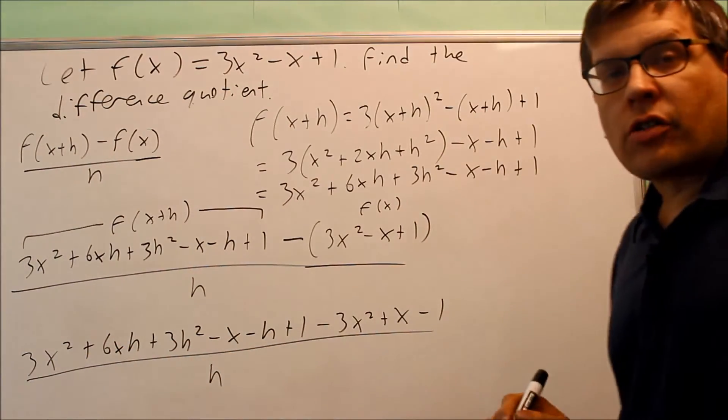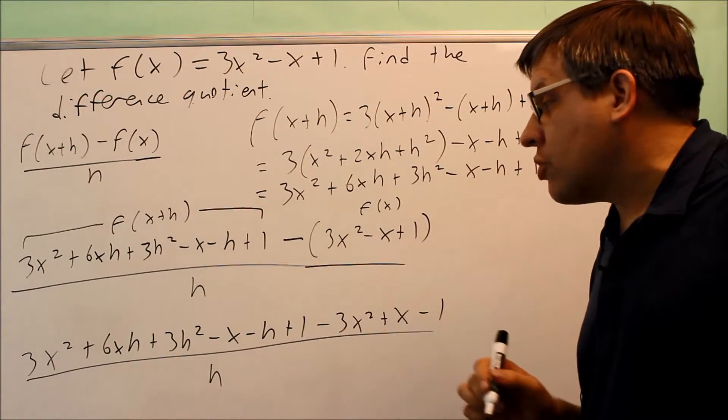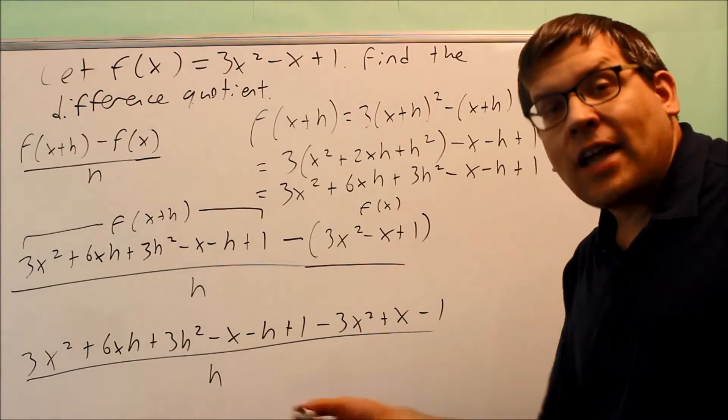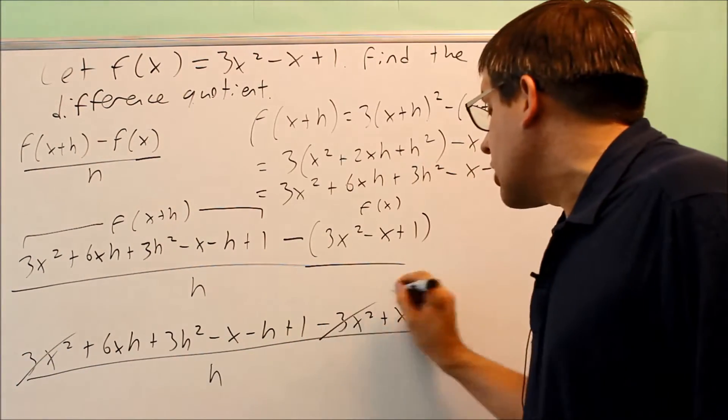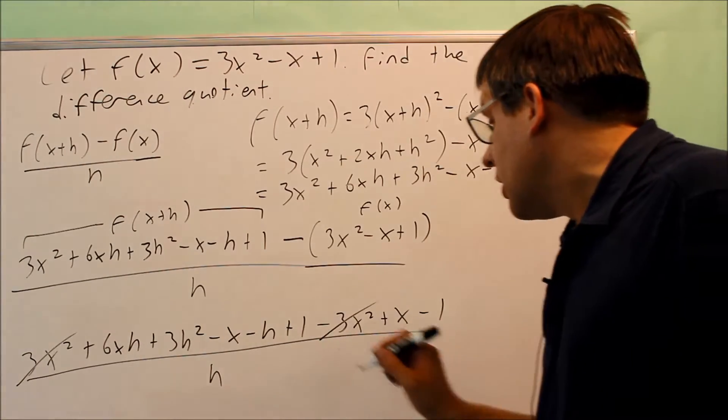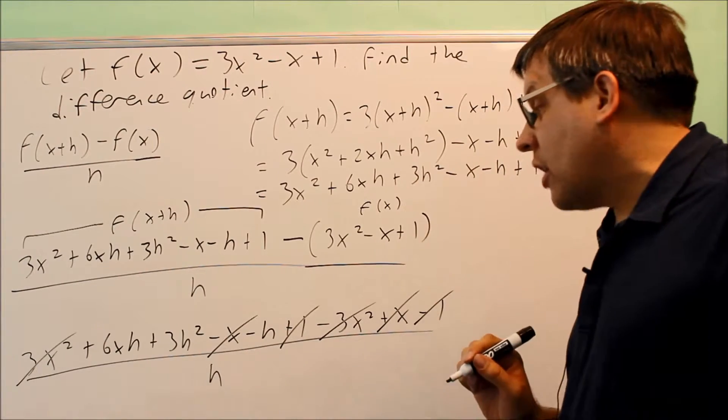If you've done this correctly, you should get a bunch of things to cancel out. Usually when you do this, what you're left with, you should only have things that have h in it left over. So in other words, the 3x squared cancels out with minus 3x squared here. You get negative x and positive x cancel. Plus 1, minus 1, that all cancels.